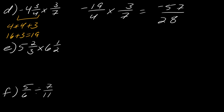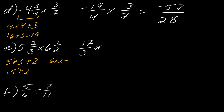Moving on to E: I have to convert both of these to improper fractions. Five times three plus two gives 15 plus two, so the first fraction is 17 over three. The second: six times two plus one gives 12 plus one, so the second fraction is 13 over two. Multiplying these together: 17 times 13 equals 221, and three times two is six, giving 221 over six.